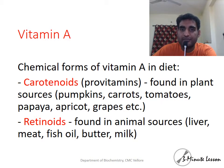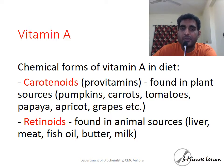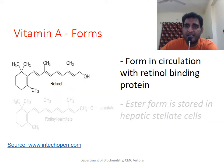Carotenoids are pro-vitamins and need to be converted to active forms — the retinoids. Carotenoids are primarily available from plant sources, while retinoids are from animal sources. There are three functional retinoids in the body, and each has its distinct physiological role.